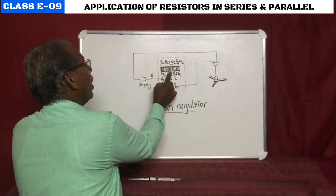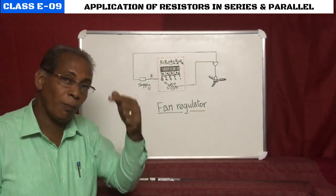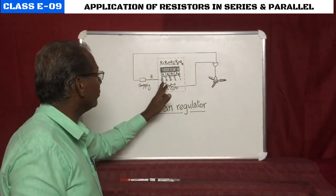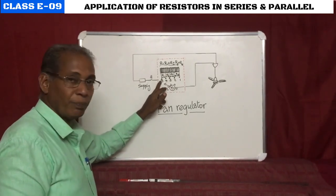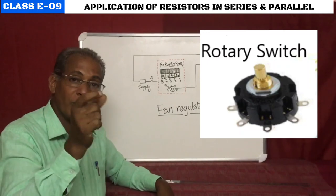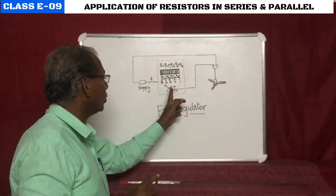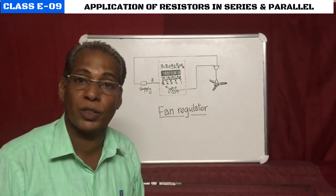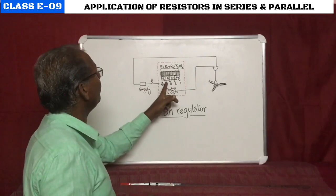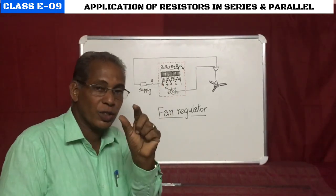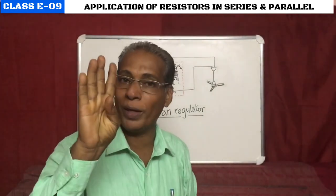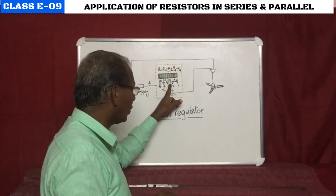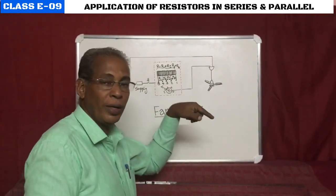We are connecting R1, R2, R3, and R4 in series, and selected terminals are made available to the fan via a rotary switch. If the pointer is at five, there is no resistance in the circuit, so the fan works with maximum current and maximum speed. If the pointer is at four, one resistor is introduced in the circuit, so we get speed four instead of five.